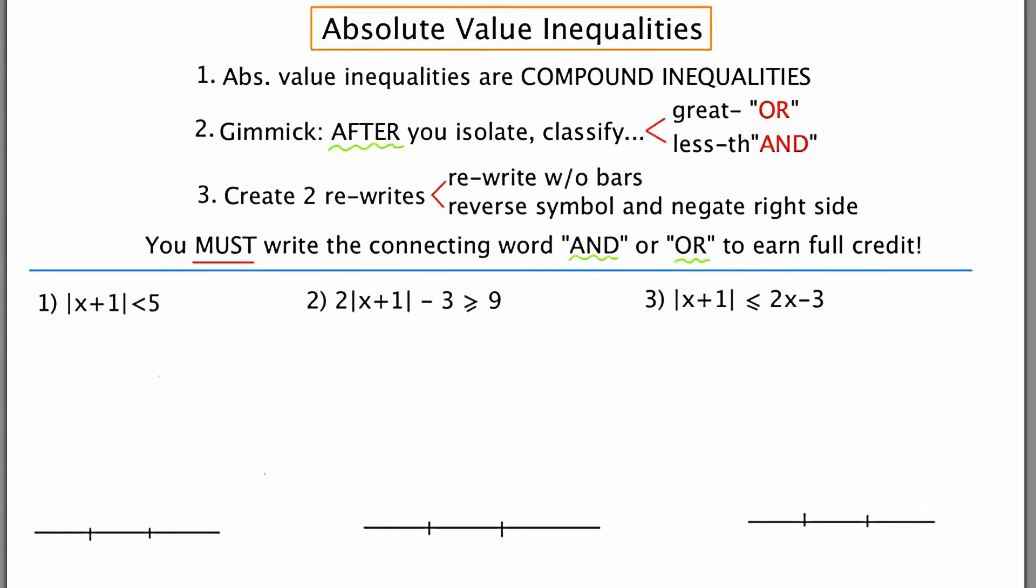Let's look at example one. The absolute value of x plus one is less than five. I see this as a less than. So my first rewrite is going to be x plus one is less than five. Solving that we end up with x is less than four. Now we're going to do the second rewrite. The second rewrite is going to be x plus one is greater than negative five. Solving this we get x is greater than negative six.